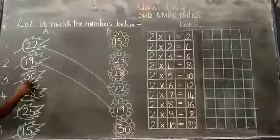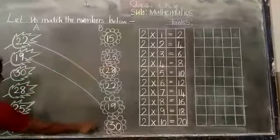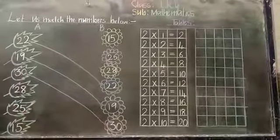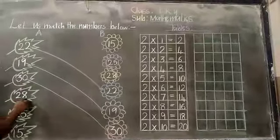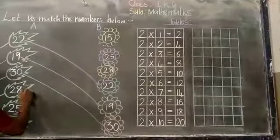30. 30. Yes sir. Column B. Down here. 30 to 30. Next. 28. 28. Here. 28.